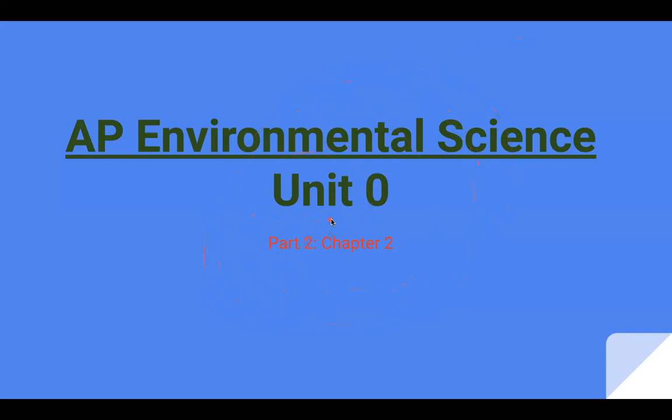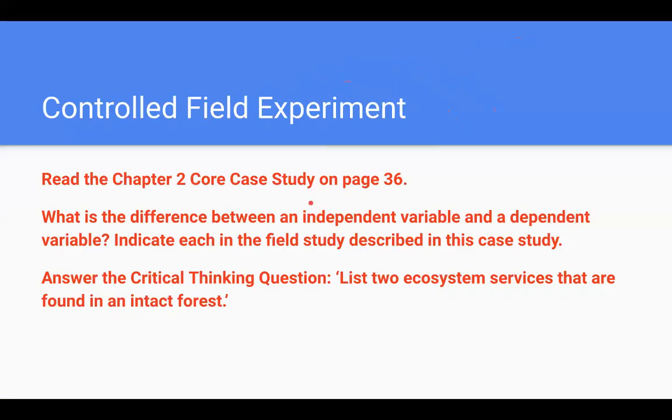Hello and welcome to our second video for Unit 0. This one is going to be all about Chapter 2. The first thing that I want you to do for this chapter is the same as last time. Go to page 36. This is the Chapter 2 core case study and it's going to talk about a controlled experiment within a forest that helped to link the relationship between trees and tree cover and erosion.